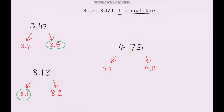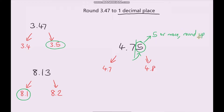We're rounding to one decimal place, so this is our first decimal place. I'm going to draw a line after that number and focus on the digit immediately after the line. If this number is greater than or equal to 5, it means we round up, whereas if it's less than 5 we round down. So: if it's 5 or more, we round up; if that number is less than 5, we round down. That's what determines whether we round up or down.